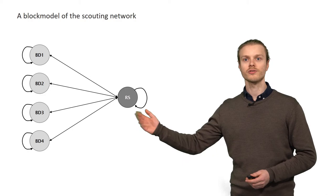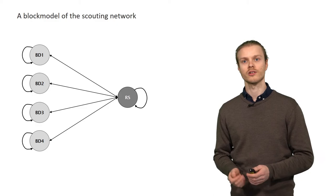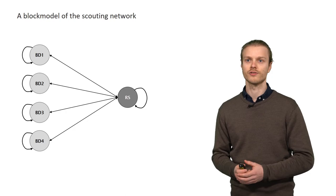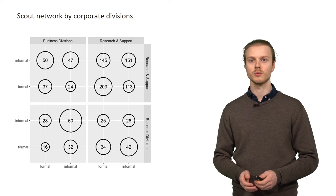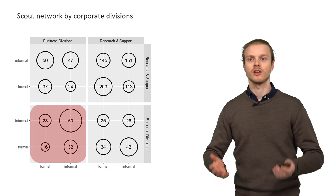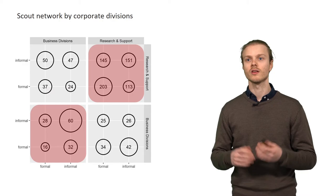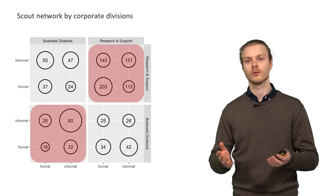We can represent this kind of structure with a reduced form graph as shown here which really makes clear the important structural role of the research and support divisions in bringing together scouting knowledge from the different business divisions. If we again take into account formal and informal scouting, we can see that on the one hand the business divisions really are the domain of exchange among informal scouts, while on the other hand within the research and support units, exchanges among formal scouts are especially frequent, but we also get overall a more balanced picture.